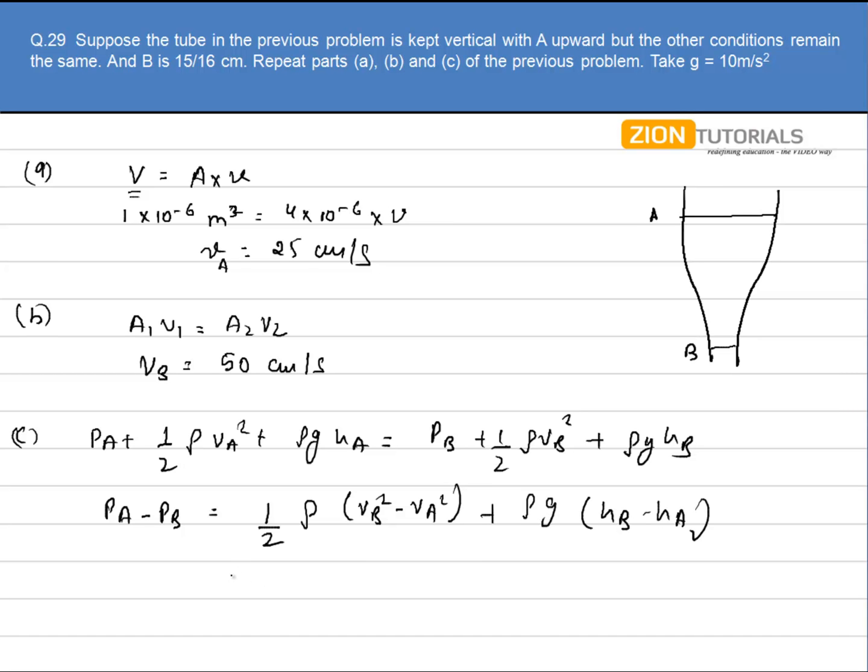So just substitute it. I have half of 1000 into 0.5 square minus 0.25 square plus 1000 into 10 into 15 by 16, and that too in cm so it will be 10 to the power minus 2 to convert it into meter. On solving this you get the value to be 0 because this is equal to this one. So it will be 0. That is the answer.